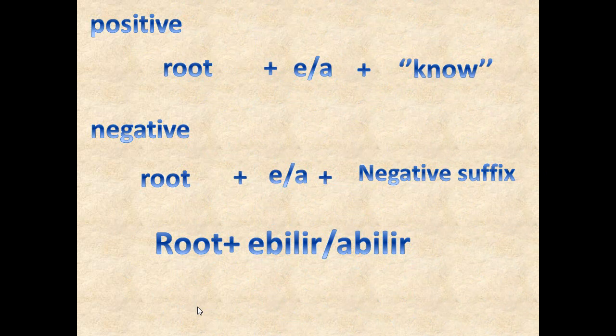In the positive form of 'can', we have the root of the verb and we have 'a' or 'e' according to the harmony of Turkish language — you know, the thick vowels and the thin vowels. We have the verb 'bil', which I have taught in a previous video. If you haven't checked that, please go and check it, because understanding this video may not be that easy without it.